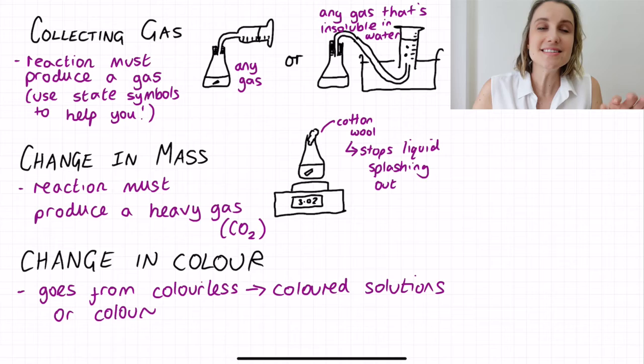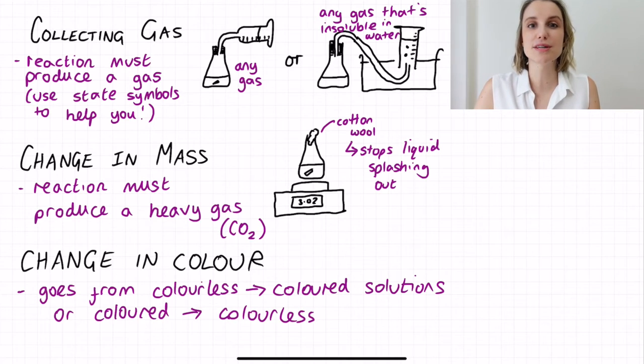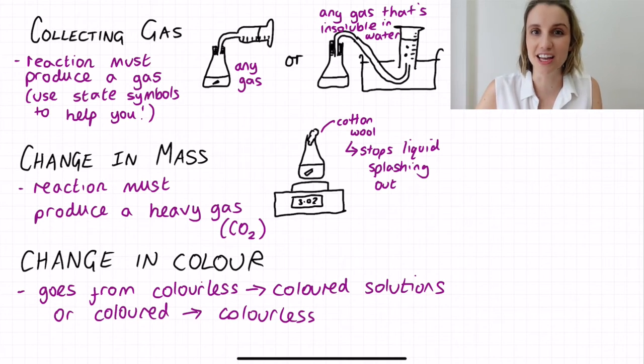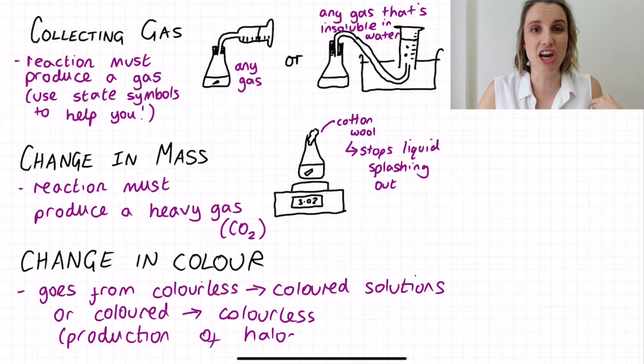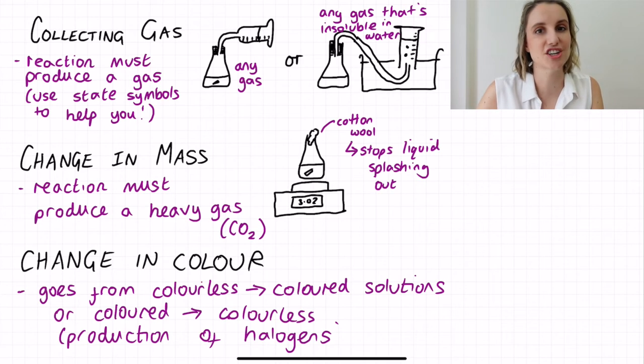The best thing to keep an eye out for here is really the appearance or the disappearance of halogens, because at GCSE they're the only things that we really know are definitely colored, and so keeping an eye out for these can tell us whether it might be changing color as the reaction goes on.